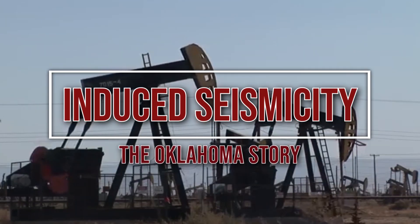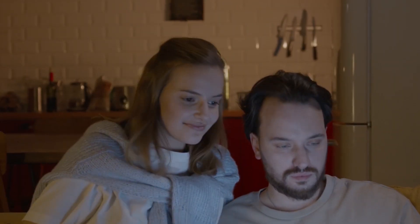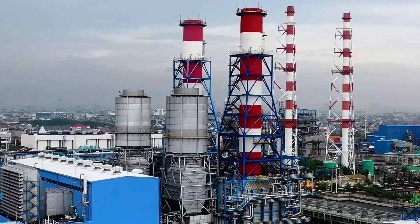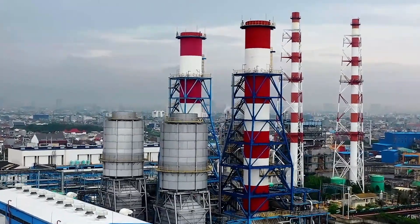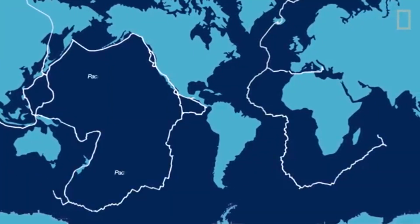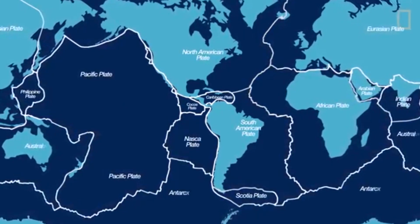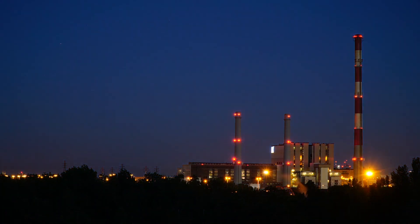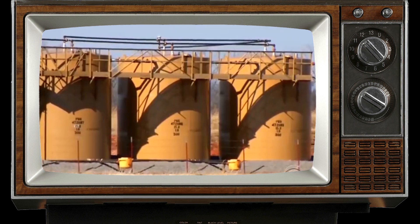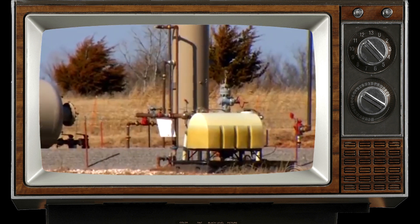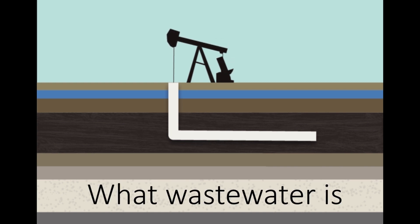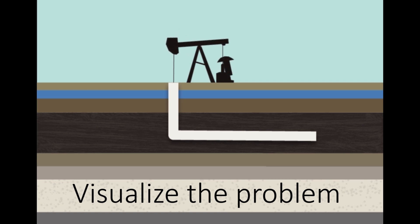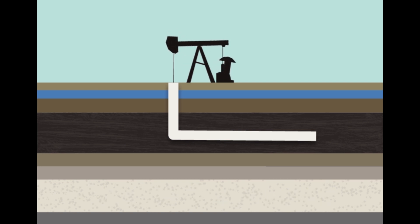All of us rely on oil and gas every day — they provide heat and electricity, power our cars, and are even in our plastics. But a serious consequence of oil and gas production is earthquakes. Typically, seismicity is caused by plate tectonics; however, there are human activities that can induce seismicity. Induced seismicity is caused mostly by the injection of wastewater into disposal wells. To understand this process, I will explain what wastewater is, how it can induce seismicity, then visualize the seriousness of this problem.